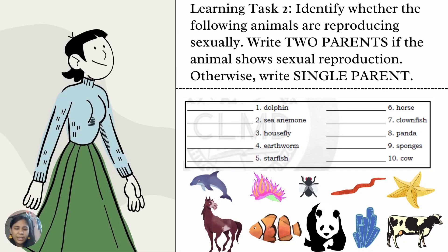Learning Task 2: Identify whether the following animals are reproducing sexually. Write '2 parents' if the animal shows sexual reproduction; otherwise, write 'single parent.' Number 1: Dolphin. Number 2: Sea anemone. Number 3: Housefly. Number 4: Earthworm. Number 5: Starfish.